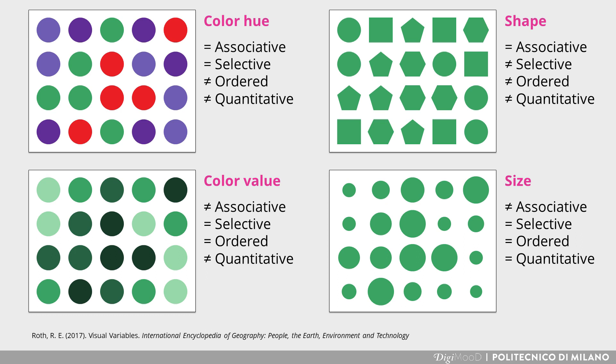Also, shapes are good in communicating groups, even if in a less powerful way, and again, no order nor quantities are communicated. On the other side, using color value, it is possible to read an order from the darkest to the palest color, but no groups and it's difficult to read quantities.